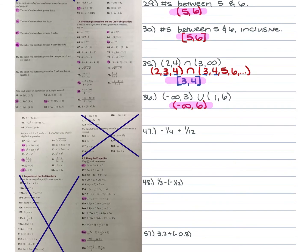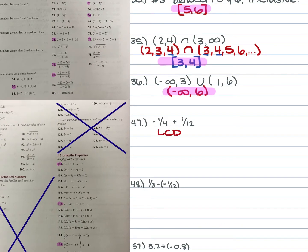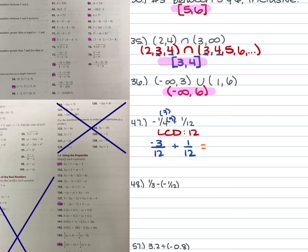The next questions involve performing the indicated operation. For number 47, we have negative 1/4 plus 1/12. The rule for adding or subtracting fractions is a common denominator. The least common denominator is 12, so multiply the top and bottom of the first fraction by 3, giving us -3/12 plus 1/12. With opposite signs, keep the sign of the larger number and subtract: -3 plus 1 gives -2 over 12. Simplified, that's negative 1/6.